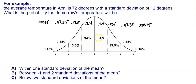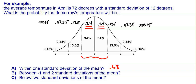If we want to know the probability that tomorrow's temperature will be within one standard deviation of the mean, we just look at the areas of each section. One standard deviation of the mean means one below and one above the mean, so we're looking at the area from negative one to one. This area represents 68% of the data, so 0.34 plus 0.34 gives us a probability of 0.68, or a 68% chance.